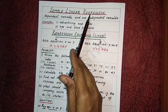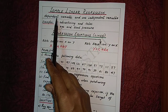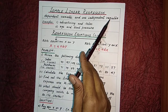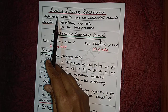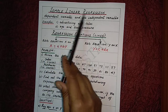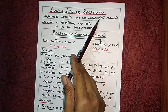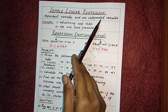Simple linear regression is the study of the relationship between a dependent variable and one independent variable. The dependent variable is the variable whose value is to be predicted, also known as the explained variable. The independent variable is the variable whose value is used for prediction, also known as the explanatory variable.